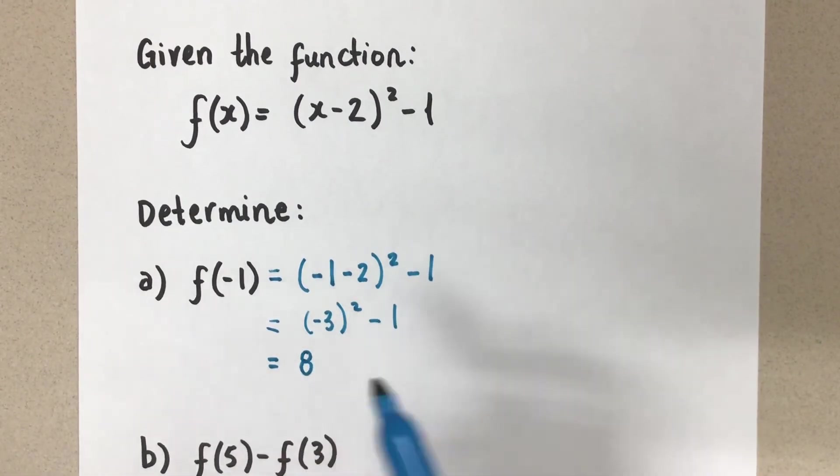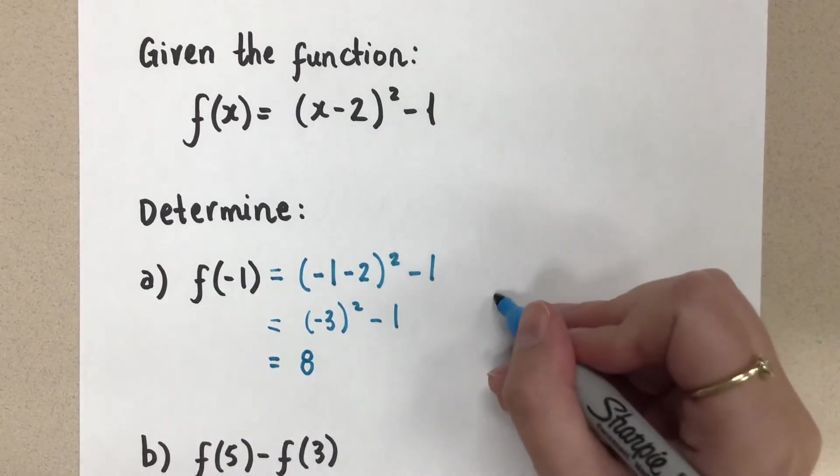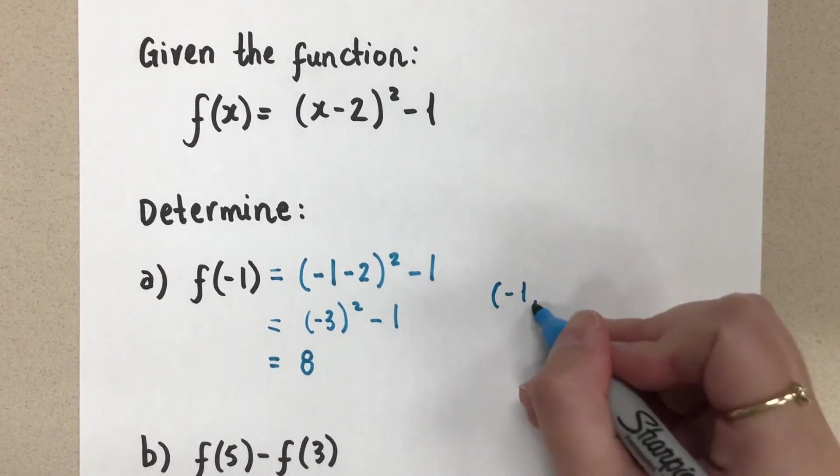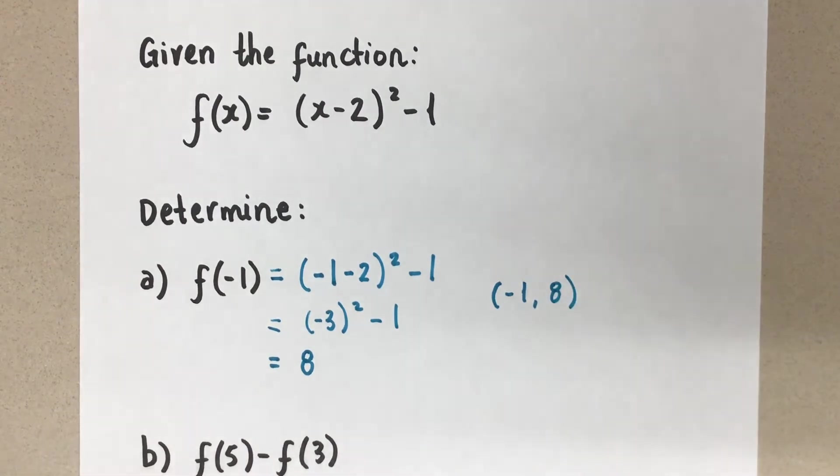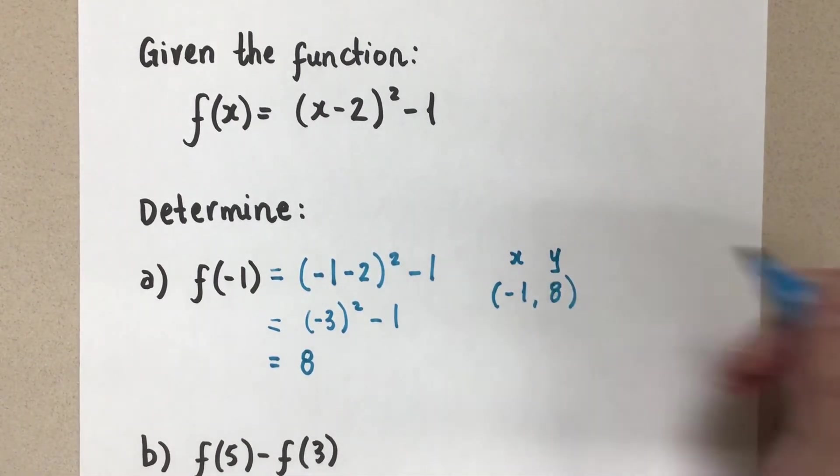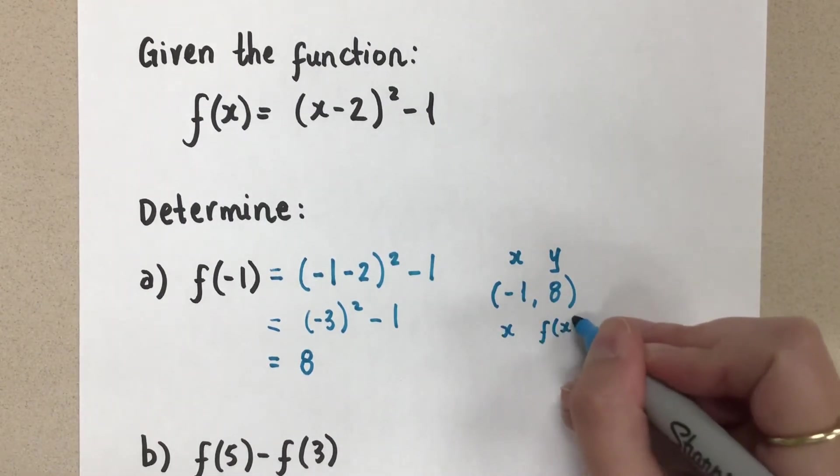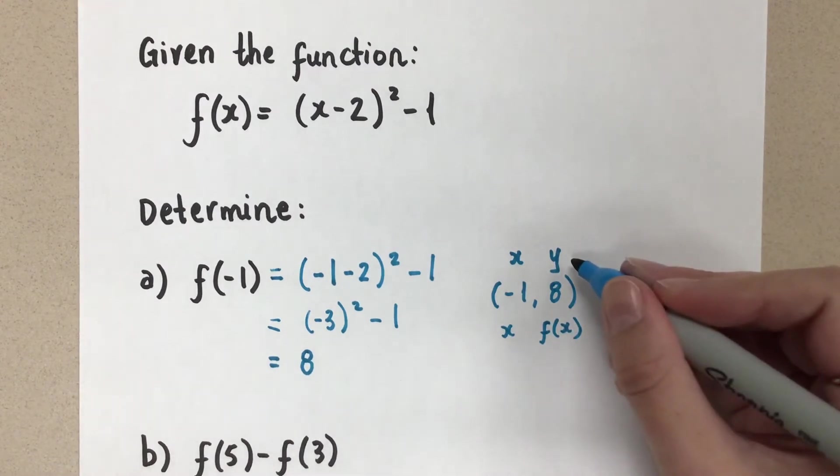Okay, so this means when x is negative 1, y is 8. In other words, the point negative 1, 8 is on the graph. So we used to think of this as x, y for the point and now in function notation, this is x and f at x. You see that f at x means the same thing as y.